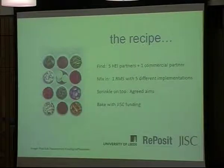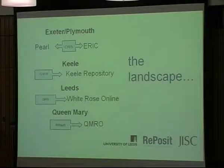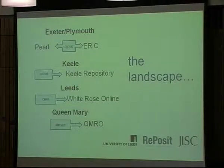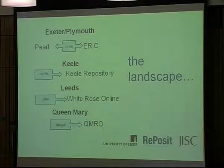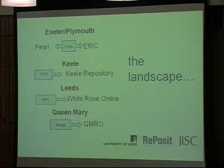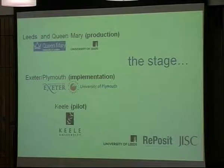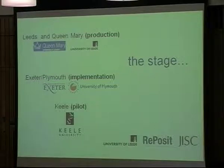We all had agreed aims, and it was backed up with JISC funding — so thank you, JISC. We also had different interactions between the systems. Exeter and Plymouth pointed to one system. Kiel and Queen Mary had a one-to-one relationship, and Leeds has an interesting setup where it's a one-to-many, many-to-one arrangement, because we all have probably two to three repositories each. And we're all in different stages between production, implementation, and pilot.